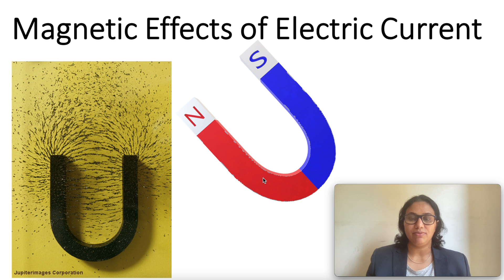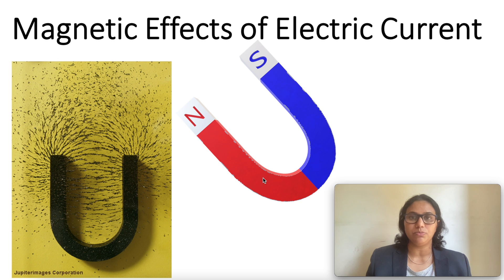Welcome back, students. By convention, the direction of magnetic field lines emerges from the north pole and merges at the south pole. But inside the magnet, the direction of lines is from its south pole to its north pole. Thus, magnetic field lines are closed curves.